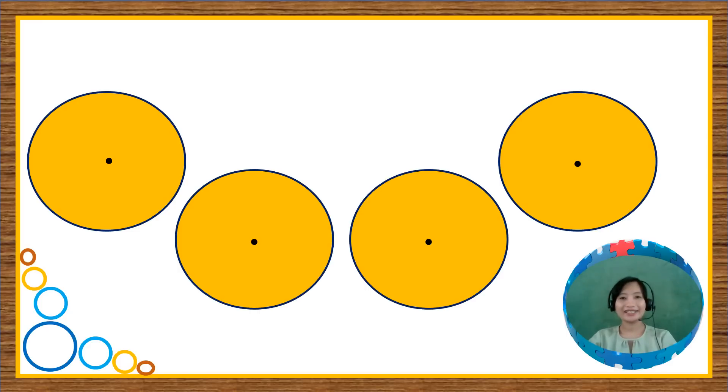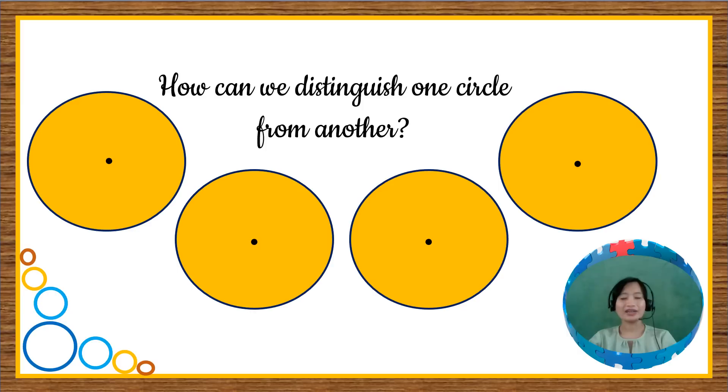As you can see in the diagram, we have 4 circles. But the problem is, how can we distinguish one circle from another? Again, the question is, how can we distinguish one circle from another?